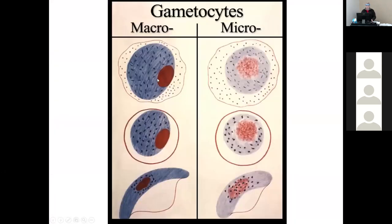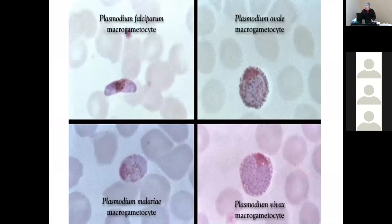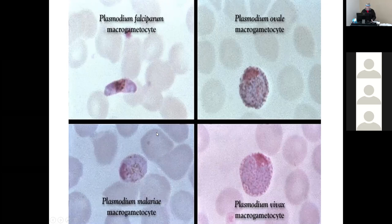Macrogametocytes are female; microgametocytes are male. Macro and microgametocytes are ingested by the next mosquito, which takes up another blood meal — and then gametocytes are spread to the next patient.